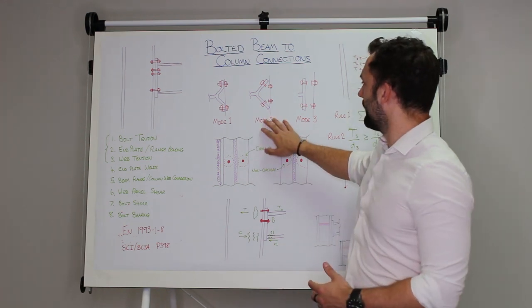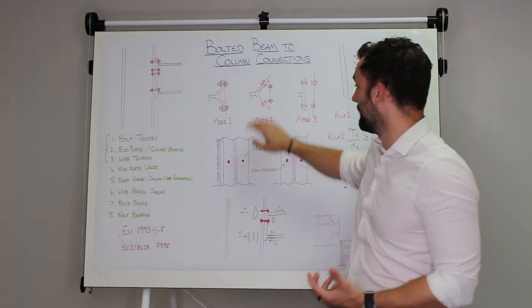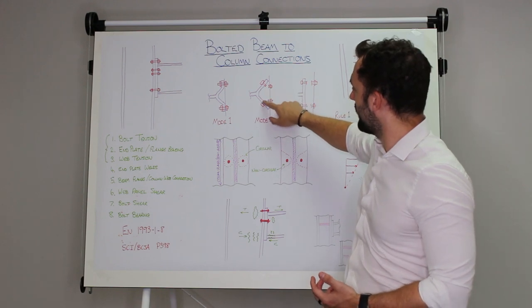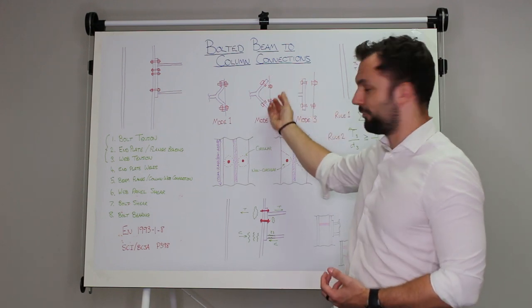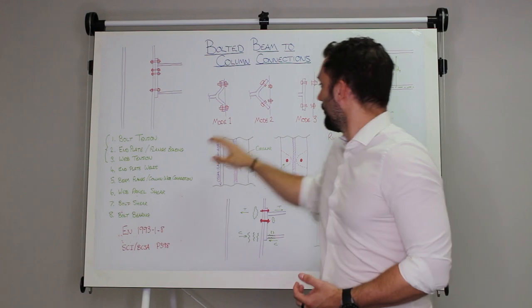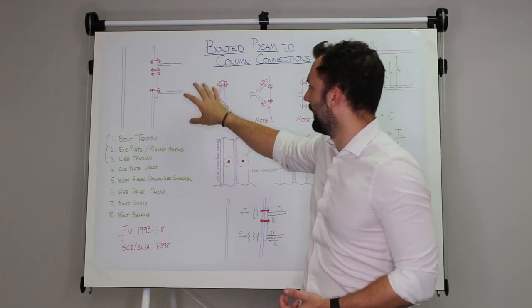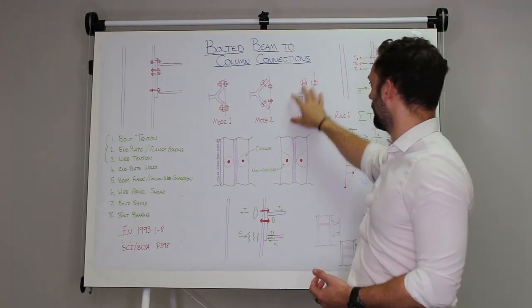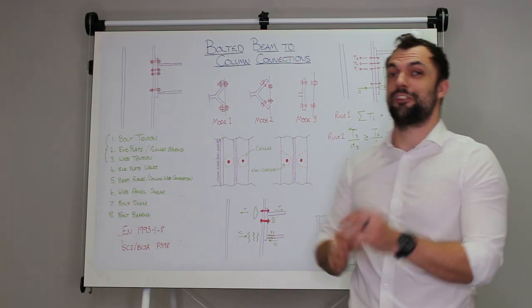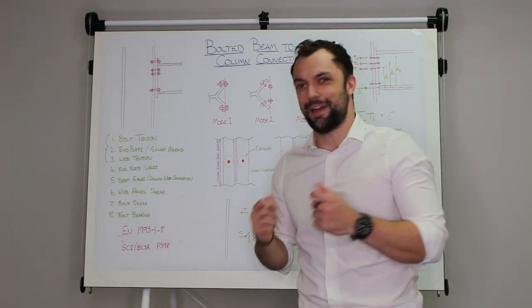The second is a combination between the bolts and the plate failing. So the plate has bent and it causes prying which is actually snapping these bolts. So that's a bit of a combination between failure of the plate and of the bolts.